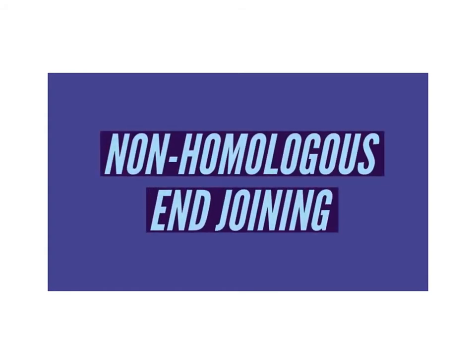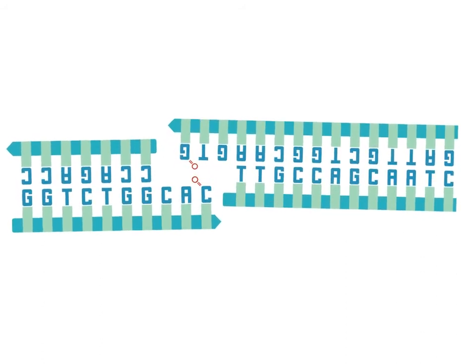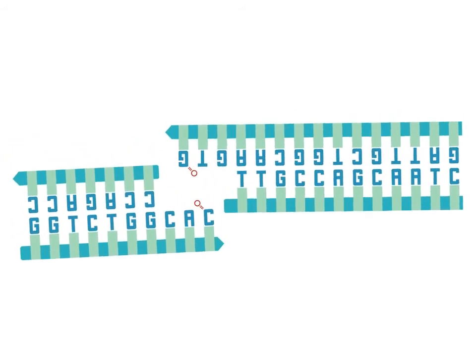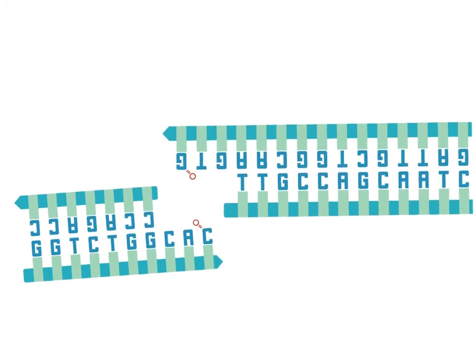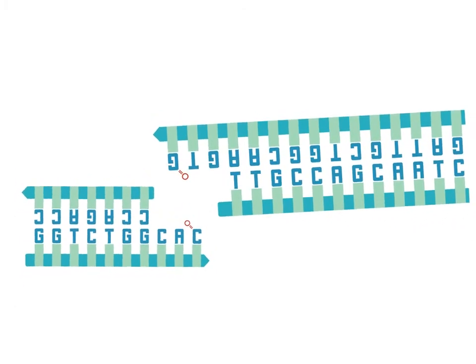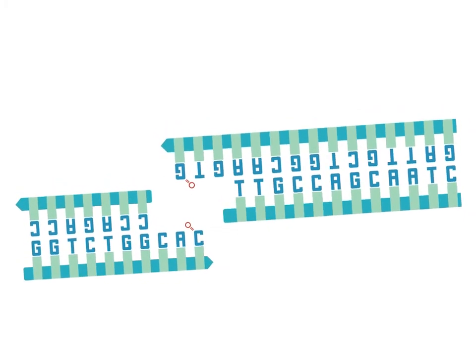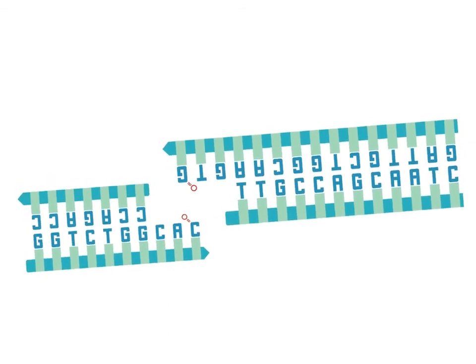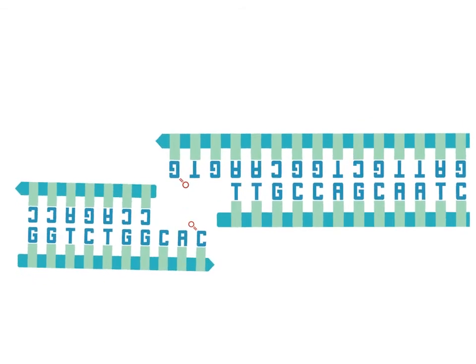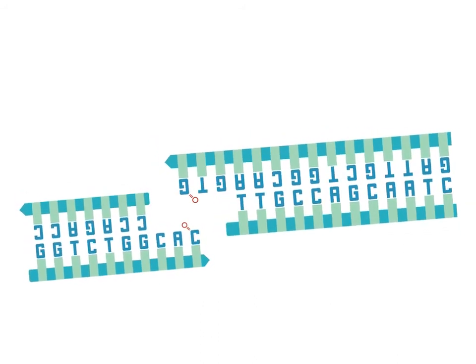We'll first look at non-homologous end joining in detail since it is the more common and simpler process of the main double-stranded DNA repair mechanisms. The majority of double-stranded break repair occurs by non-homologous end joining and it can occur at any point in the cell cycle. Non-homologous end joining is not considered a high-fidelity process. Because a template is not required for repair, the mechanism is prone to error and to the introduction of mutations. Deletions in particular often result, and translocations may result if non-matching DNA ends are ligated together.